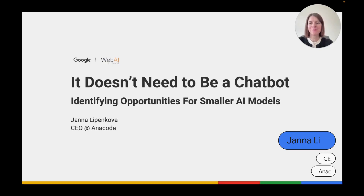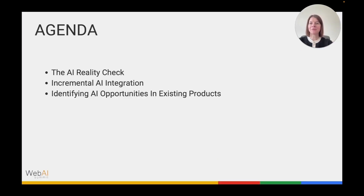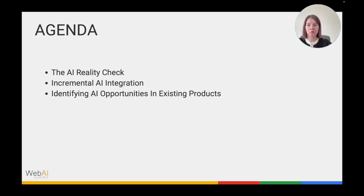My presentation today is about identifying opportunities for smaller AI models. The content is based on my new book, 'The Art of AI Product Development,' which distills lessons learned from implementing AI in different companies both before and after the launch of ChatGPT in 2022. The agenda: first, a reality check of what often happens when companies start with AI; second, an alternative, more organic and incremental approach; and finally, a tool to help identify and structure AI opportunities for existing products.